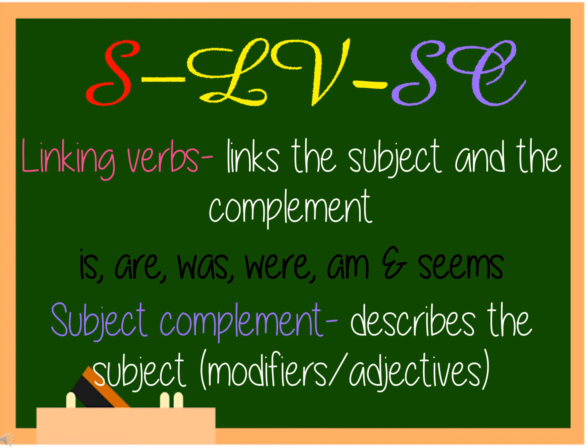The last type is the Subject-Linking Verb-Subject Complement, or SLVSC pattern. Linking verbs link the subject and the complement. These are IS, ARE, WAS, WERE, AM, and SEEMS. On the other hand, subject complements are words that describe the subject. They are called modifiers or adjectives.